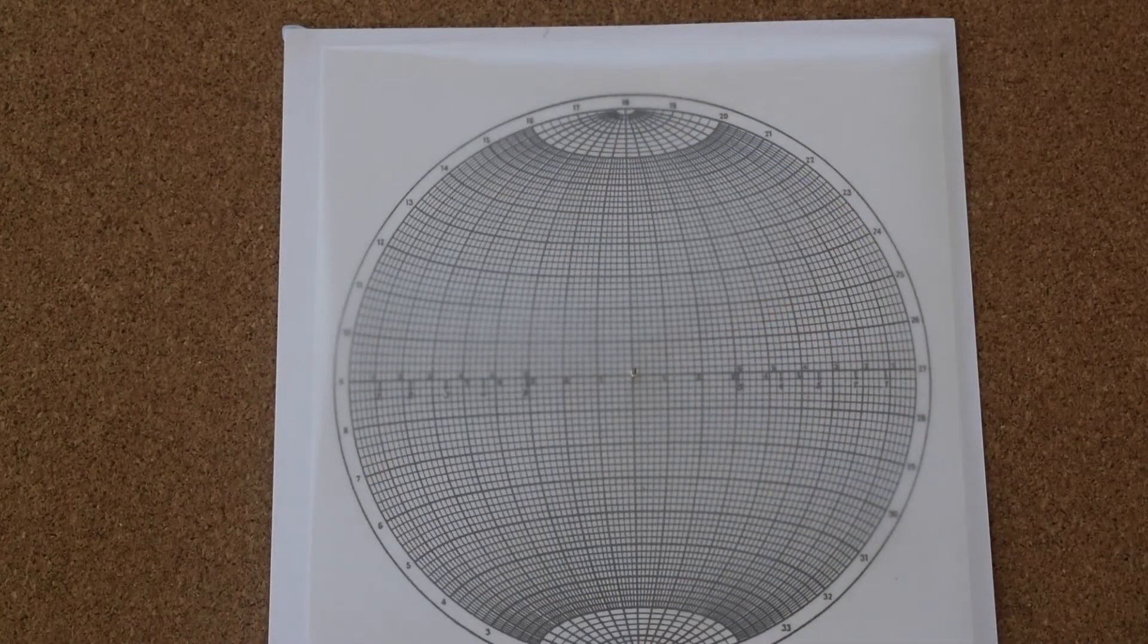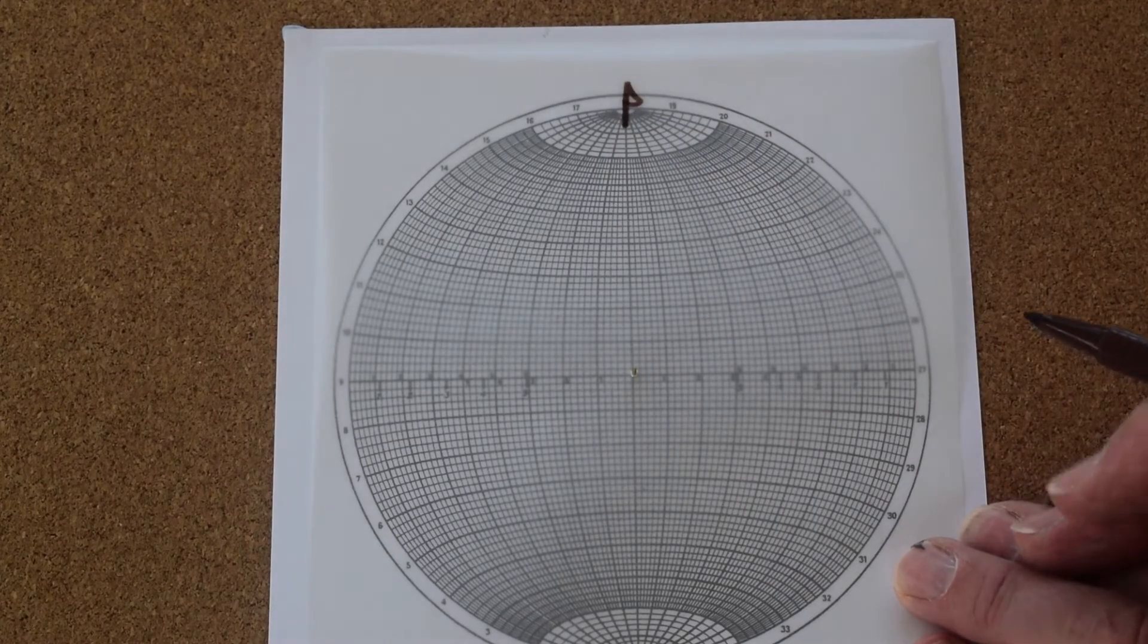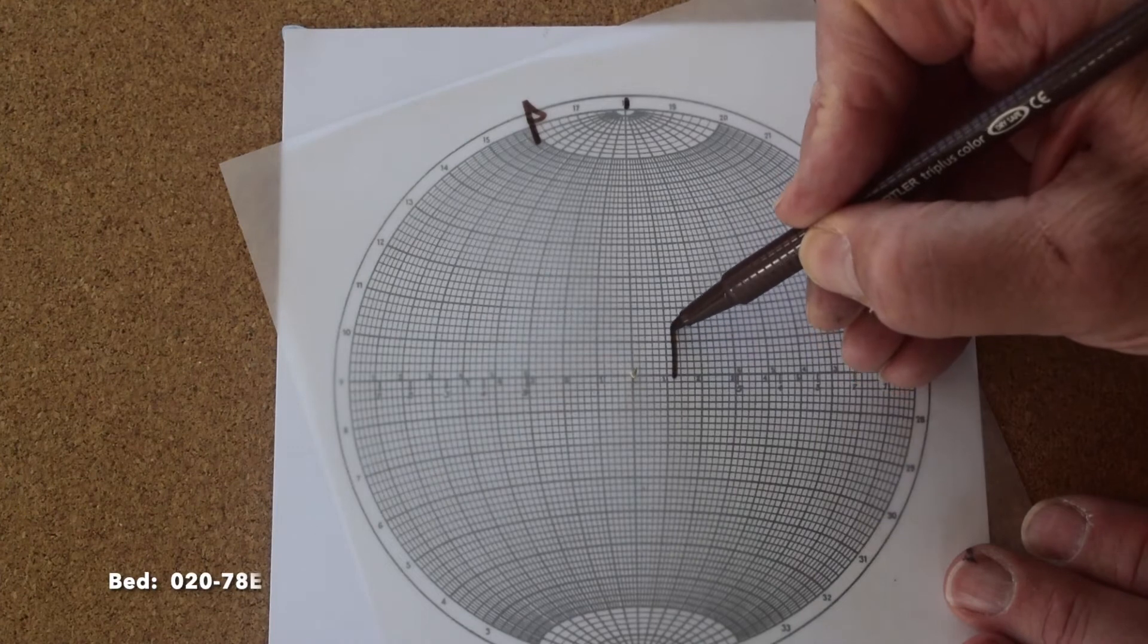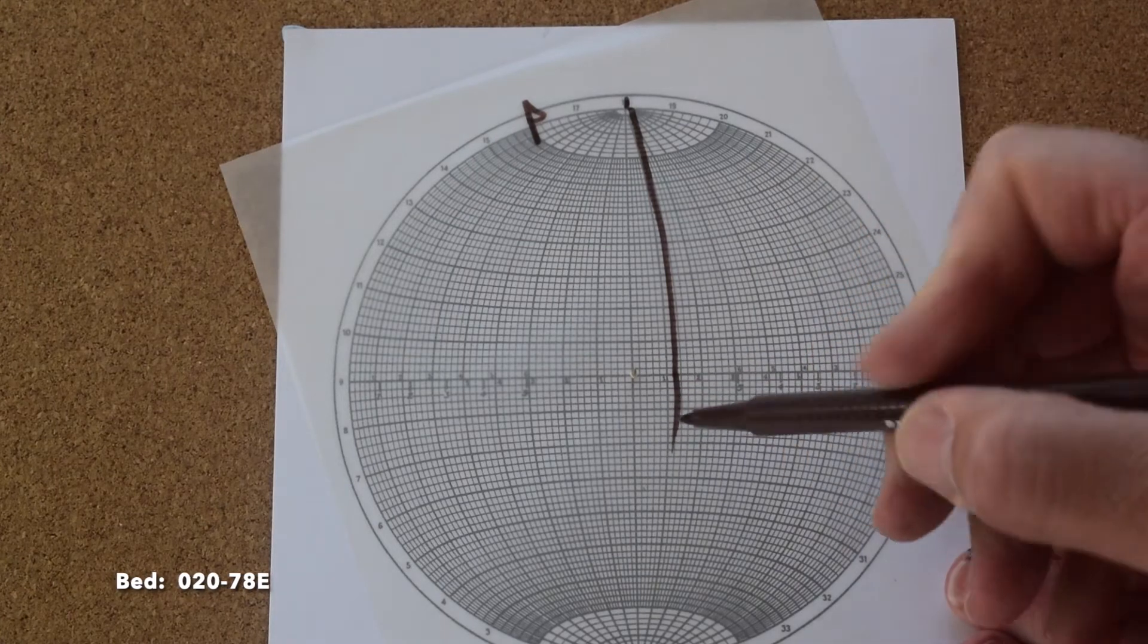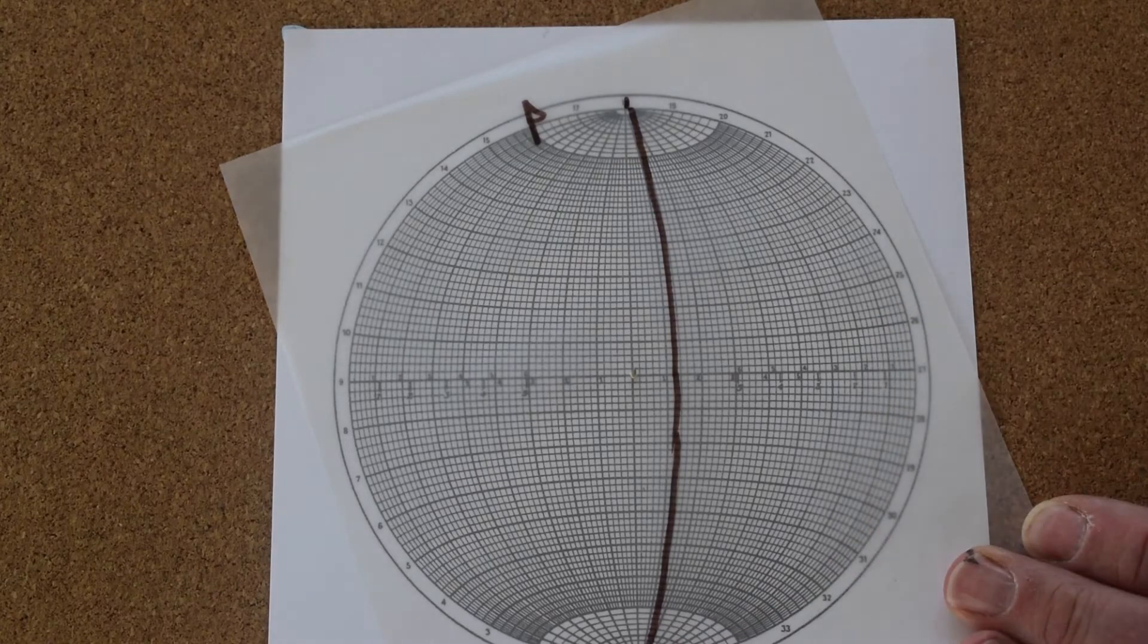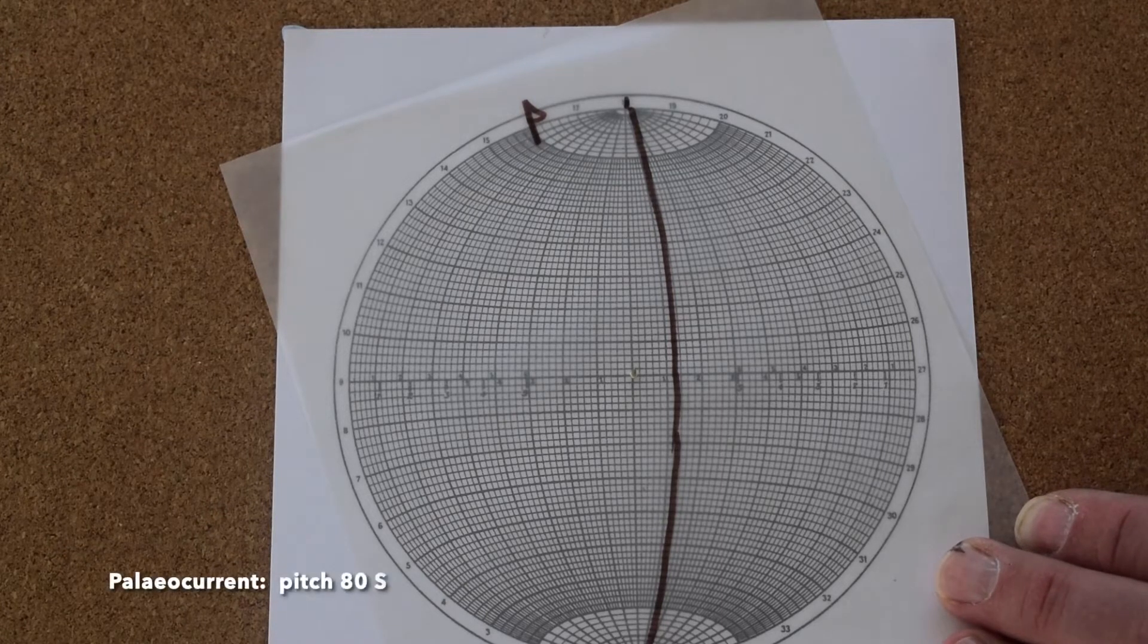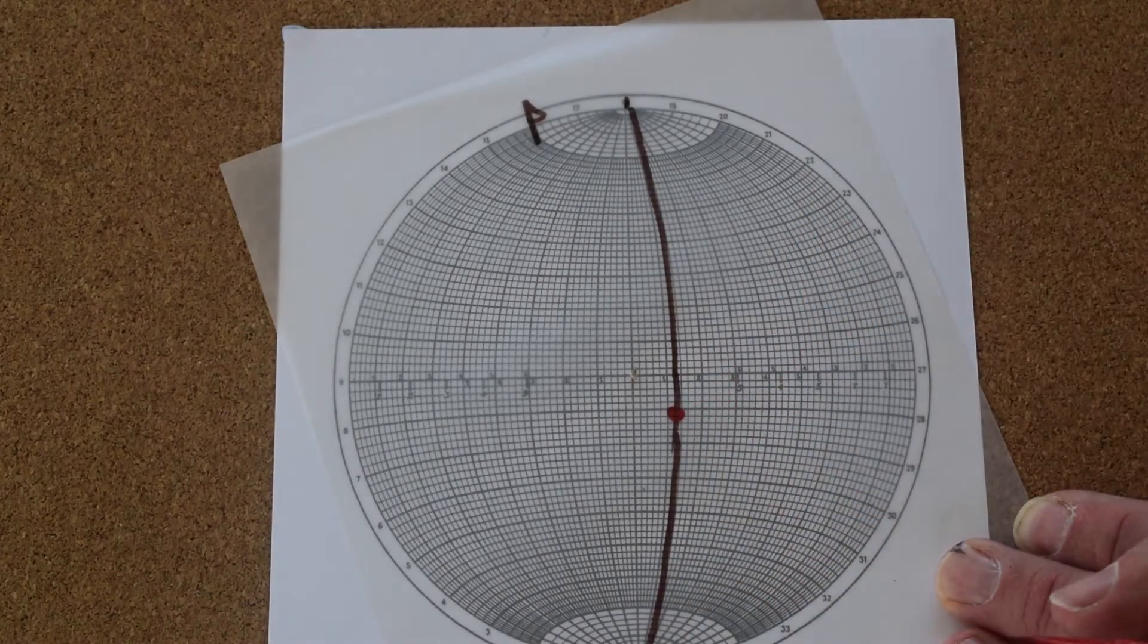So let's plot some data up. Let's put a north arrow and our bedding is 020, 78 east. So there's our bed that's 020, 78 east. And now we're going to put our paleocurrent indicator on and that has a pitch of 80 from the south. So there's the orientation of our paleocurrent.